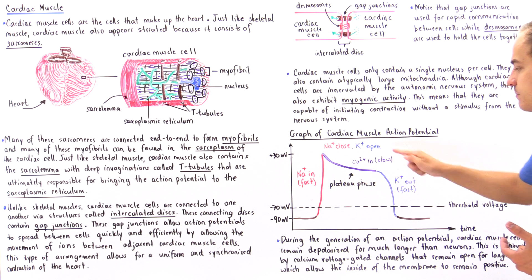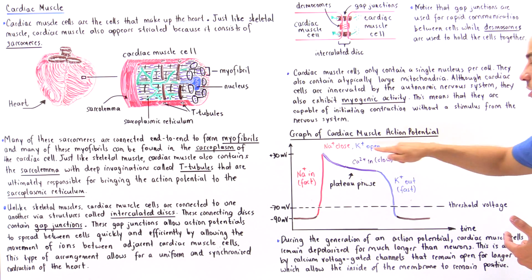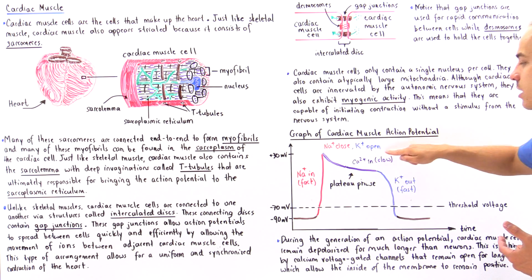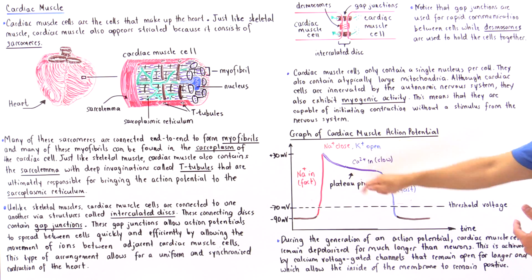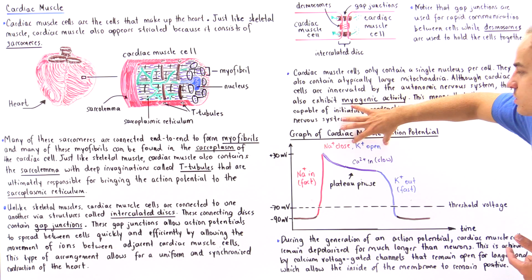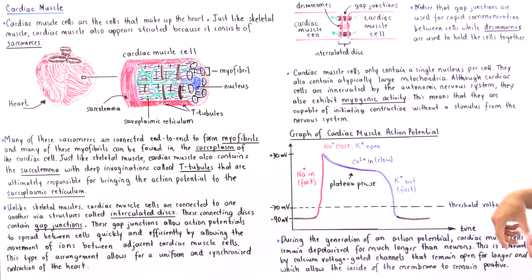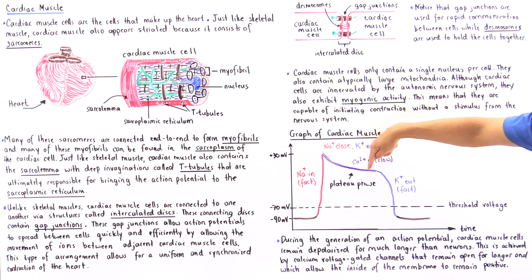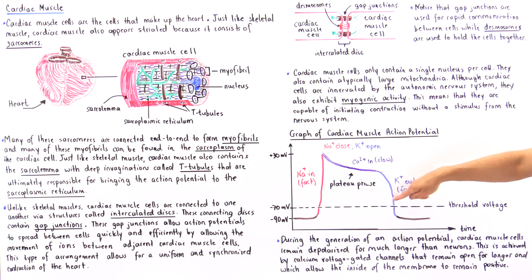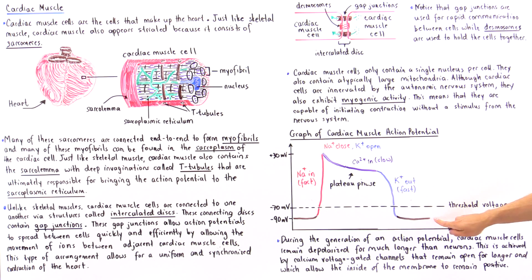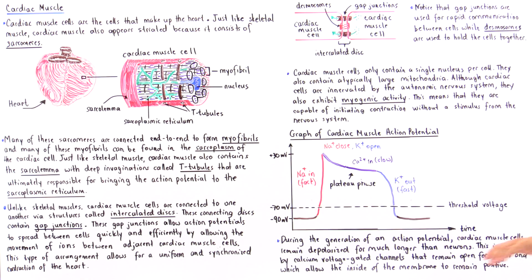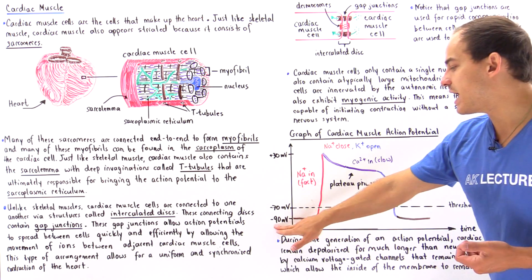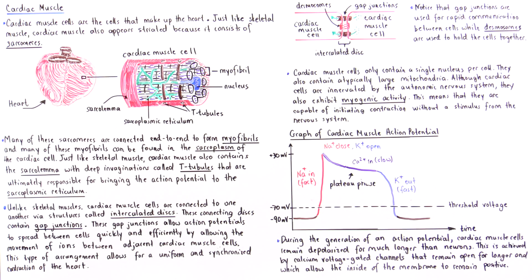Eventually, the calcium channels begin to close and the potassium channels open more quickly, producing a repolarization period. The membrane potential then returns to the normal resting membrane potential of negative 90 millivolts.